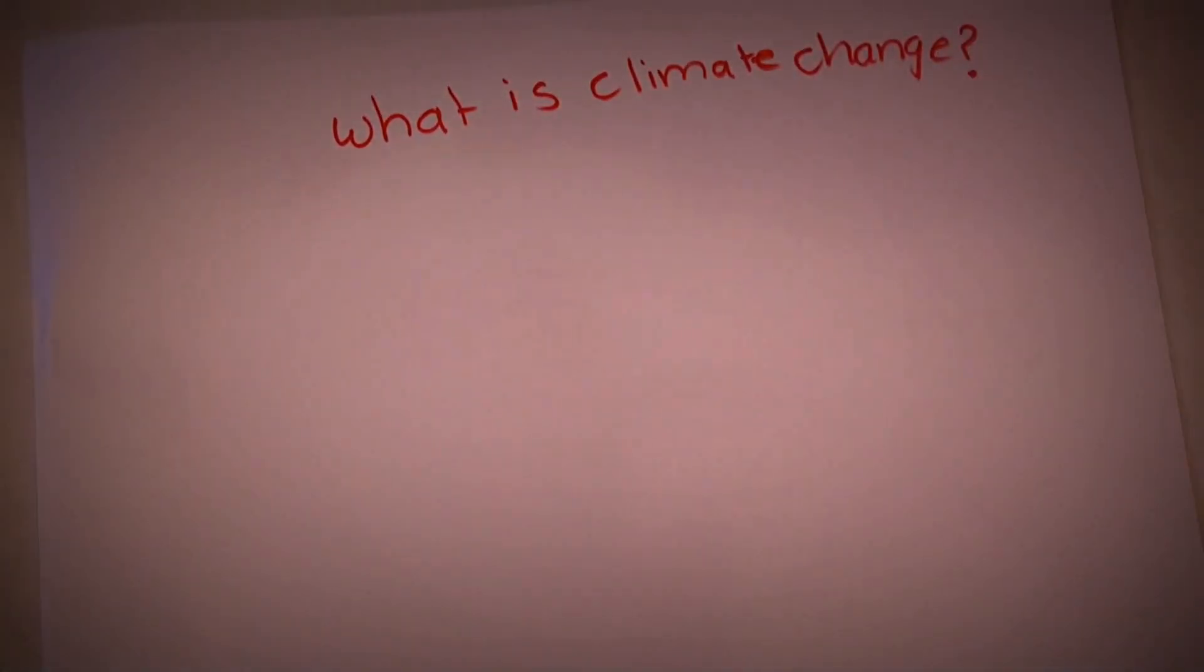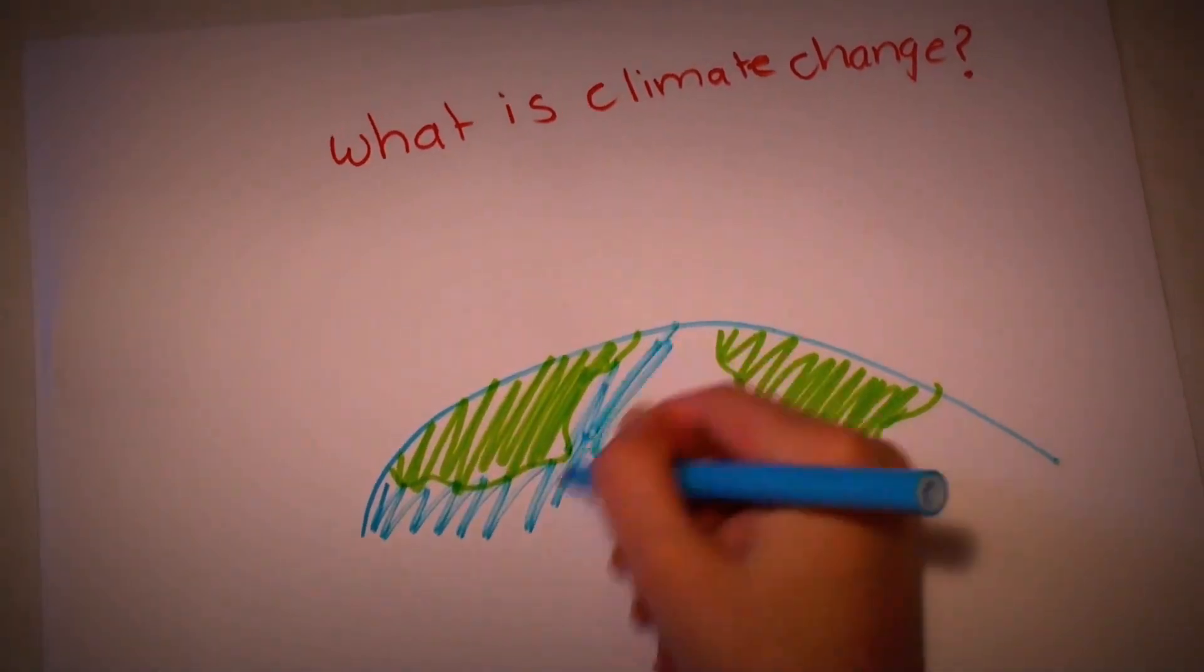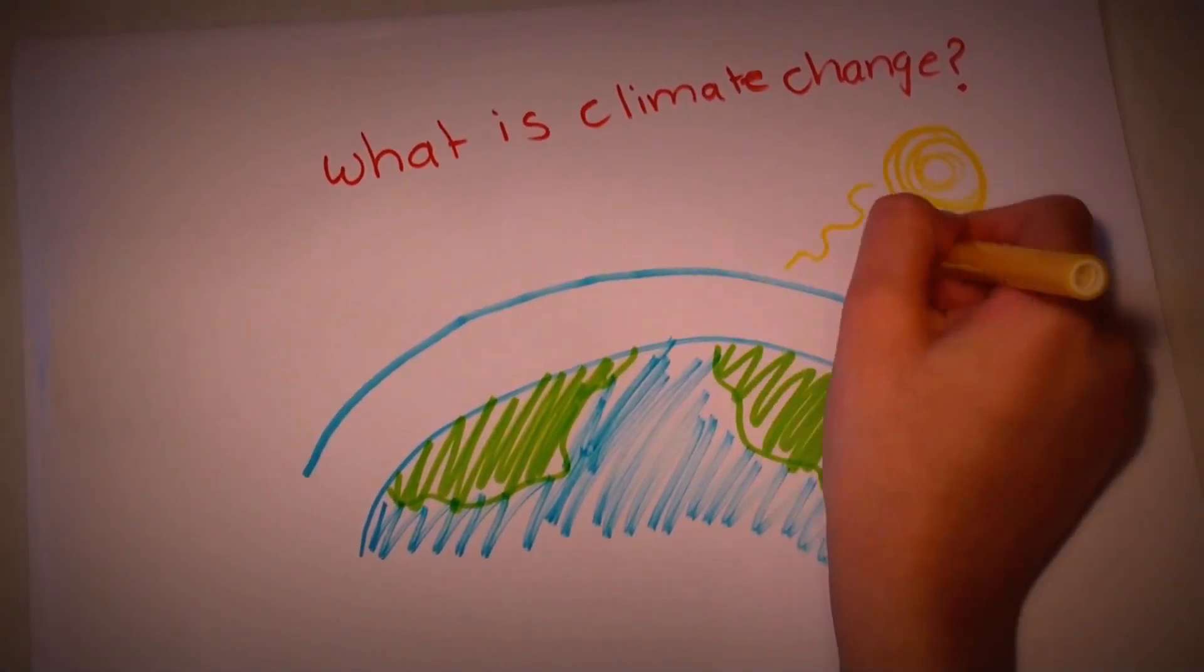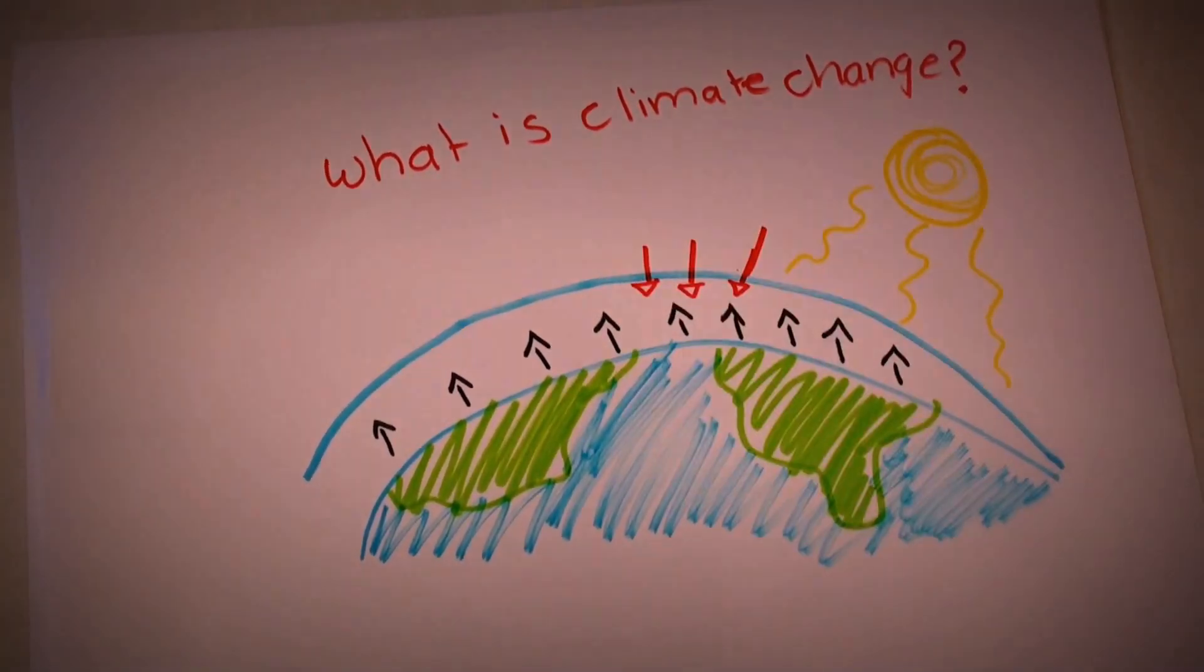Climate change is also known as global warming. But what is climate change? Climate change is a gradual increase of the Earth's temperature, attributed to the greenhouse effect caused by high concentrations of greenhouse gases.